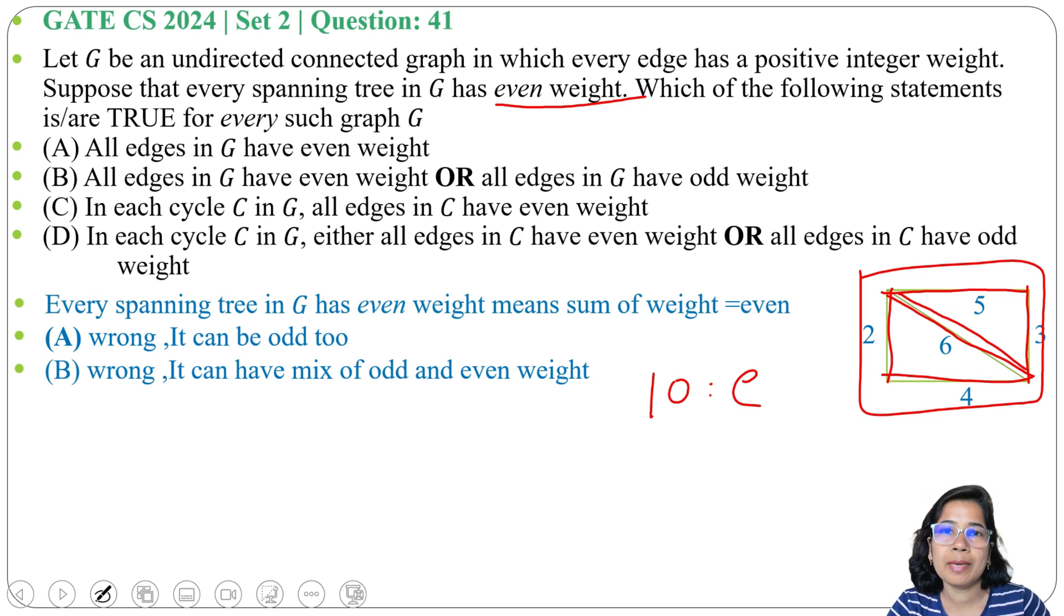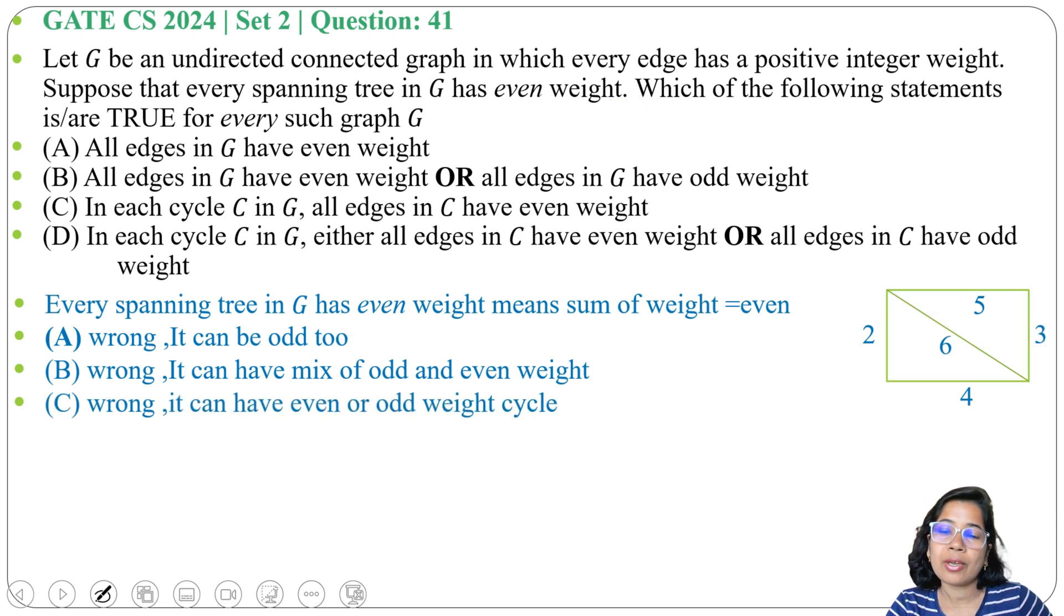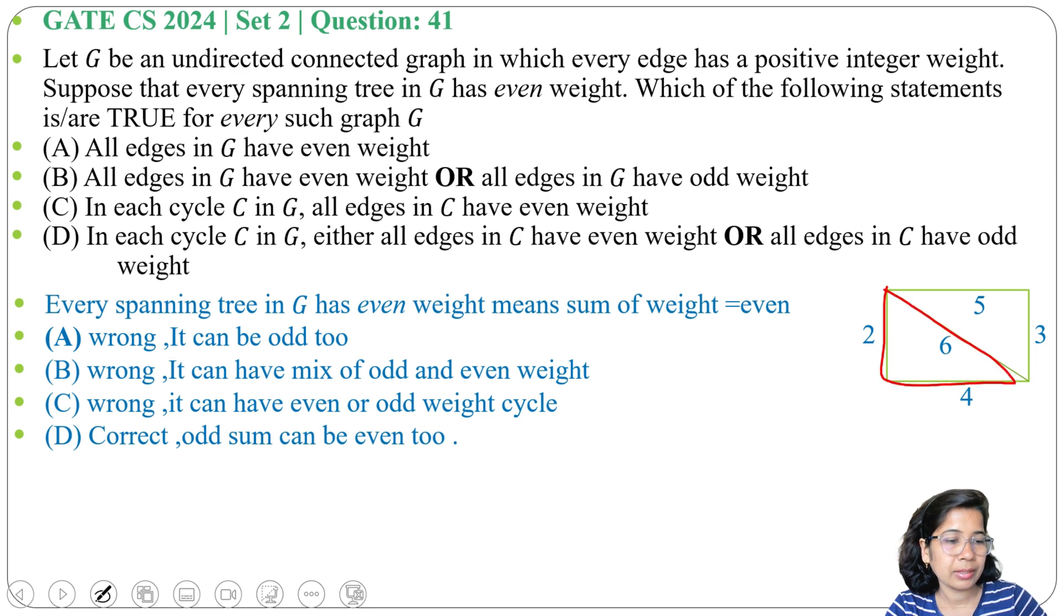In each cycle it can be even or odd. In each cycle it can be even or odd. Here it's written all edges are even, that's why it is wrong. Next option D: in each cycle C in G, either all edges in C have even weight or all edges in C have odd weight. This is correct, so there can be either even weight or odd weight. Here this cycle we are considering - here all are even. There can be another cycle too.